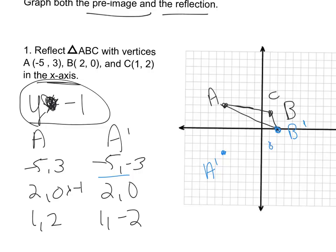And 1, negative 2, there's my new C. So there's my new triangle. There it is, reflected. And that's what it looks like over the x-axis.